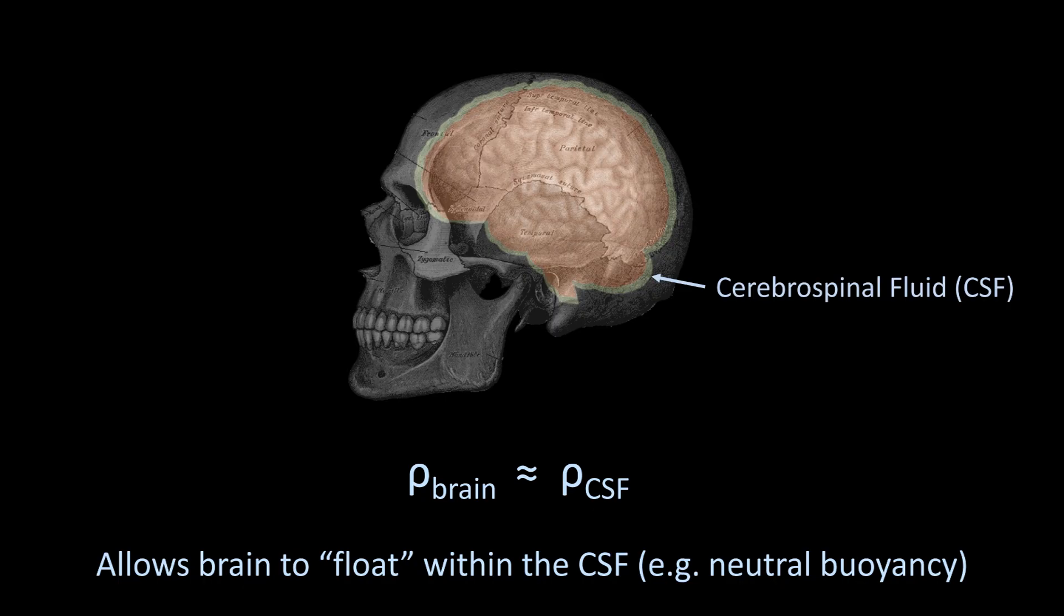Why this is so critical is that without the CSF, and without the buoyant force on the brain, the bottom of the organ would get compressed by the overlying weight of the rest of it. This compression would cut off blood flow, leading to the death of neurons, and eventually death of the patient.